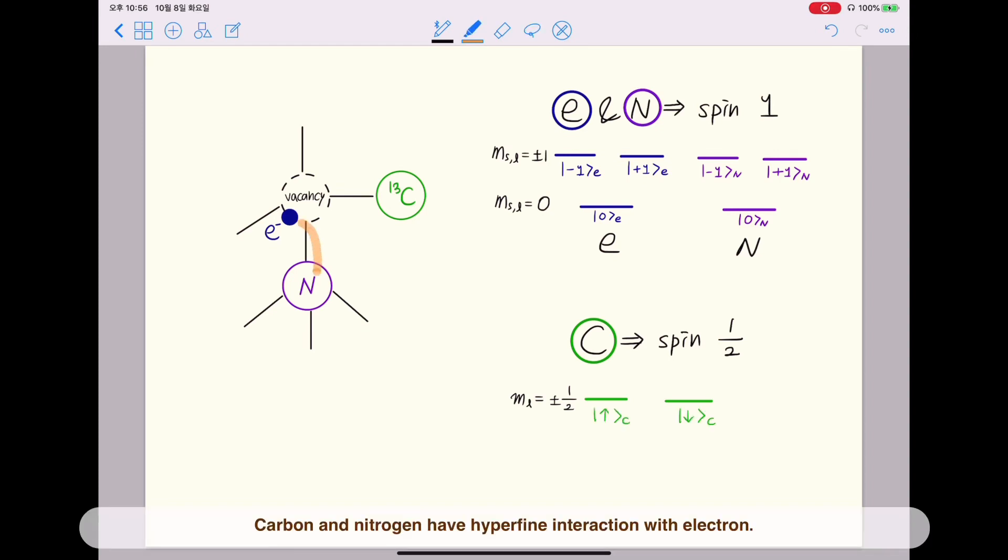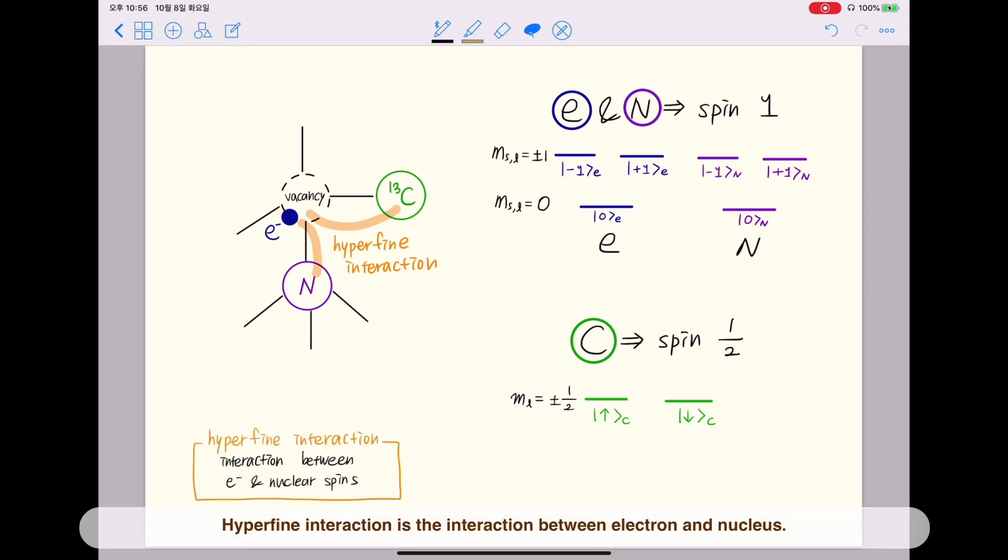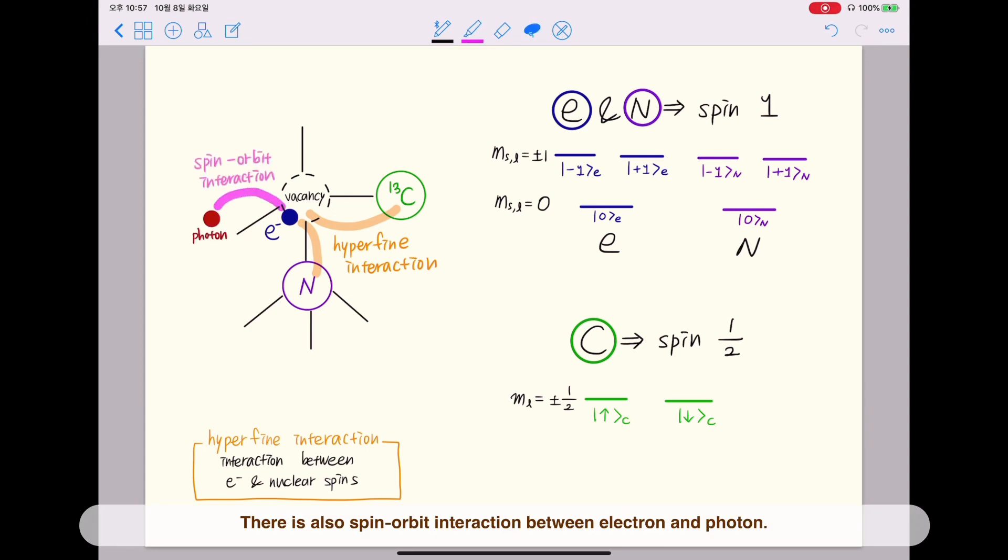Carbon and nitrogen have hyperfine interaction with electron. Hyperfine interaction is the interaction between electron and nucleus. There is also spin-orbit interaction between electron and photon. We will explain this concept later in details.